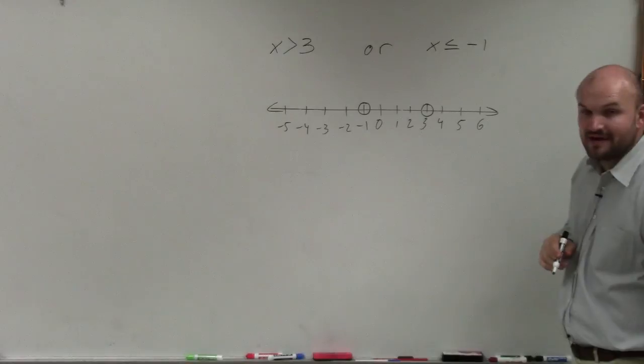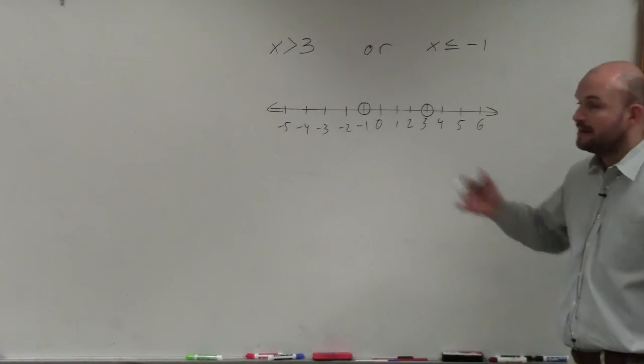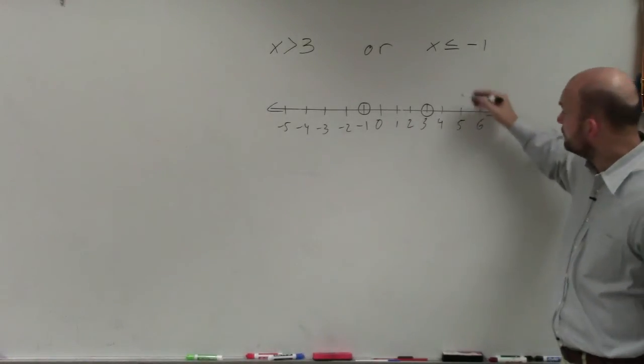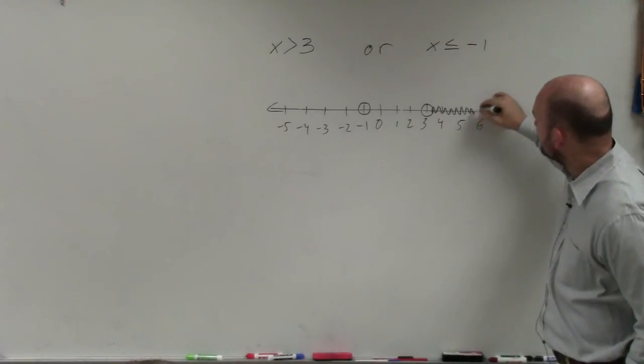So in this case, if I have x is greater than 3, all the values that are greater than 3 are going to be values to the right. So you're going to go ahead and shade.